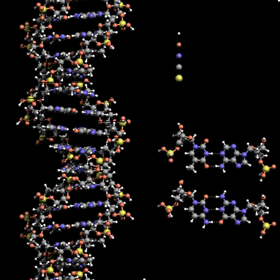Deoxyribonucleic acid is a molecule composed of two chains that coil around each other to form a double helix, carrying the genetic instructions used in the growth, development, functioning, and reproduction of all known living organisms and many viruses.